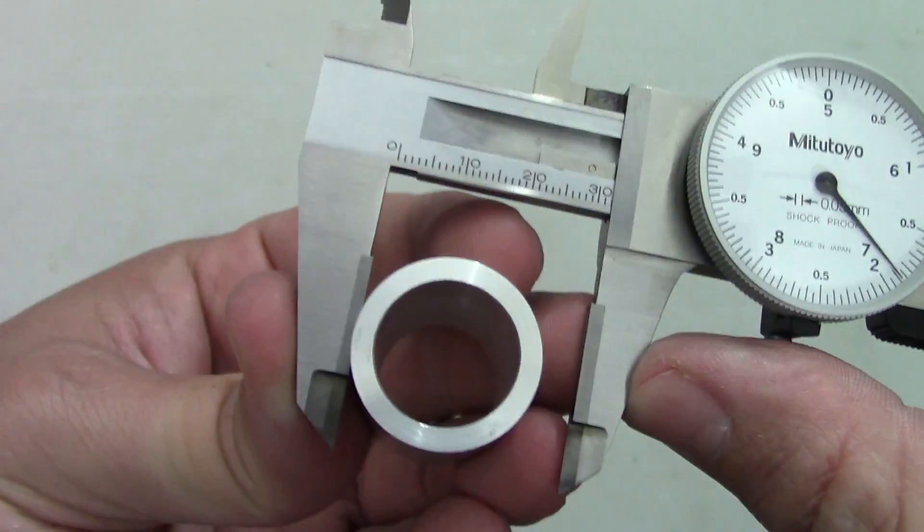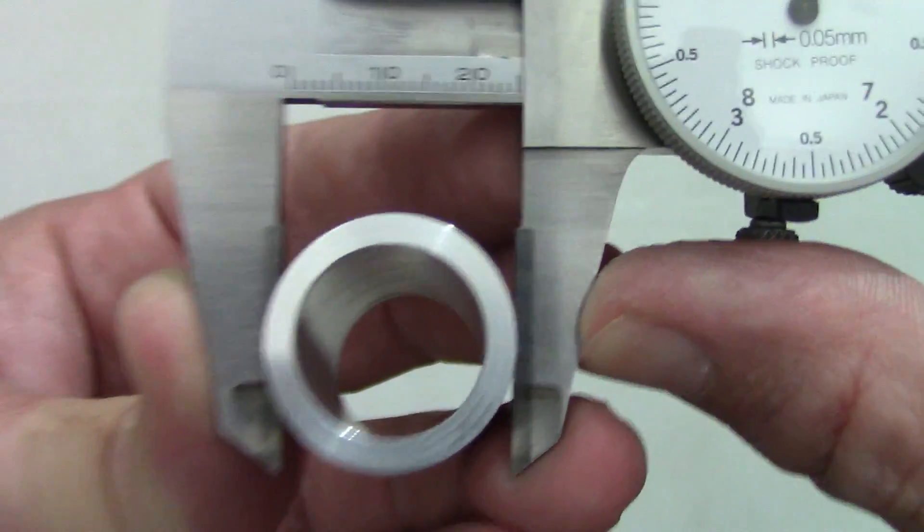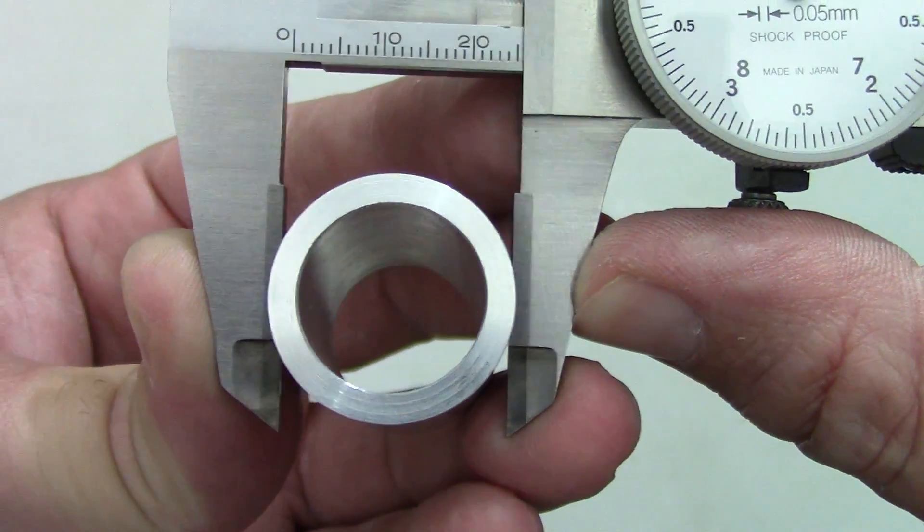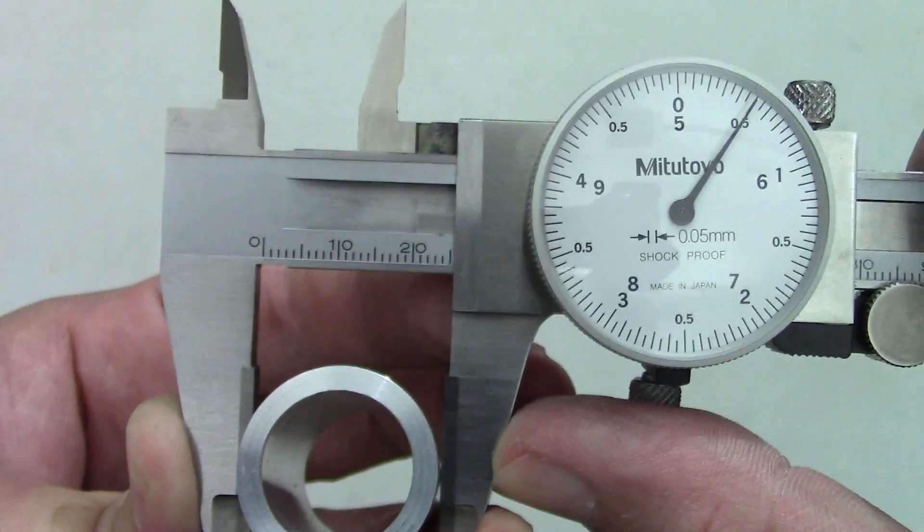The most reliable way of measuring with the outside jaws is to squeeze the jaws themselves. This lets you feel when the jaws are seated well against the part, and you won't be able to put an excessive amount of force on the tool that might affect your measurement.